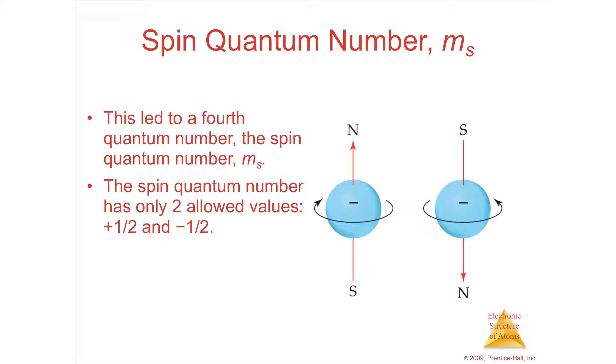So the spin number is positive one-half and negative one-half. There's two possibilities. That means one's going one direction and the other's going the other direction. I've shown you before when I drew an orbital that I denoted it by an arrow, one going up and one going down. That's showing that they're spinning in different directions.